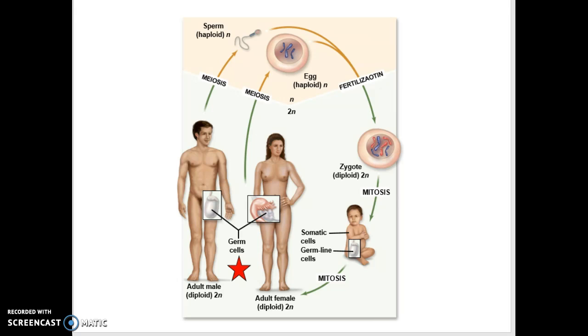It's one sperm and one egg that goes through fertilization. Fertilization occurs, the cell cycle starts. So after fertilization, the cell cycle begins.